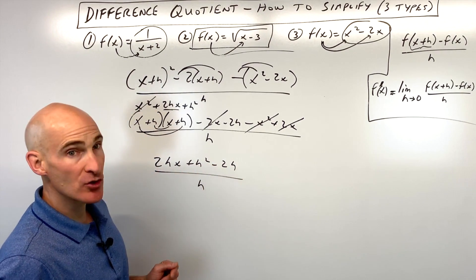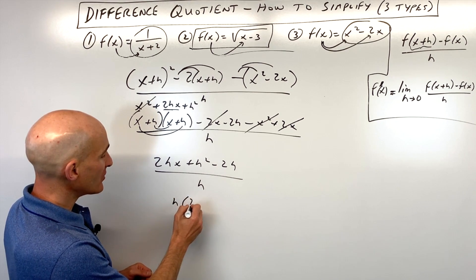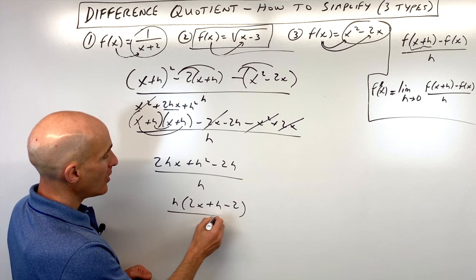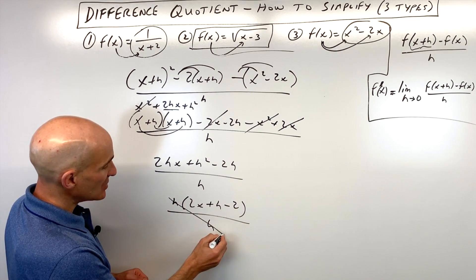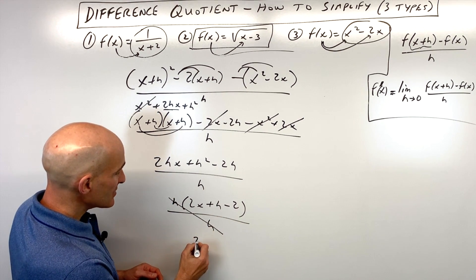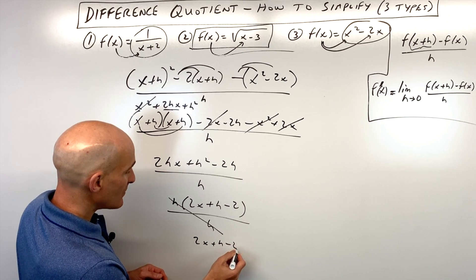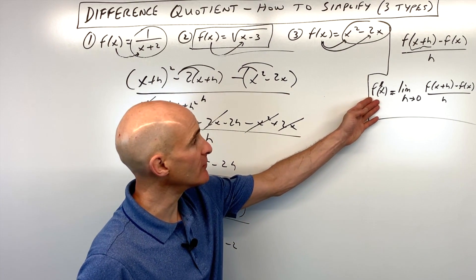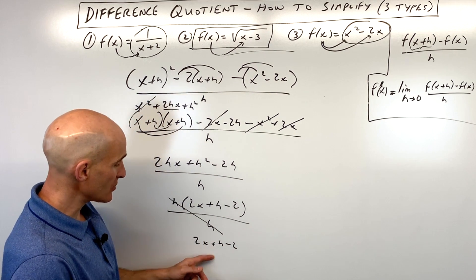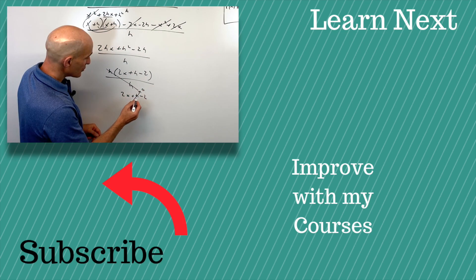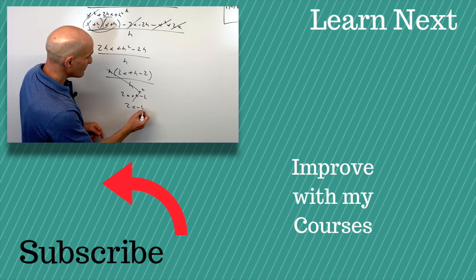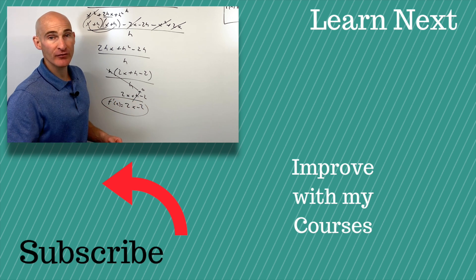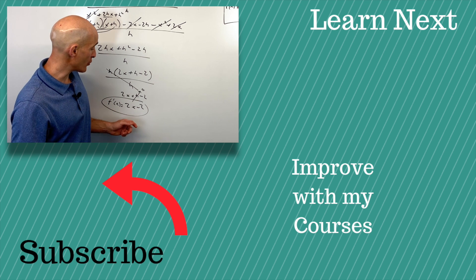There's an h in each term in the numerator. Factor it out to get h times two x plus h minus two, divided by h. The h's cancel, giving two x plus h minus two — that's your difference quotient. To find the derivative, take the limit as h approaches zero: h goes to zero, leaving two x minus two. That's your derivative — a formula for finding the slope at any point along the curve.